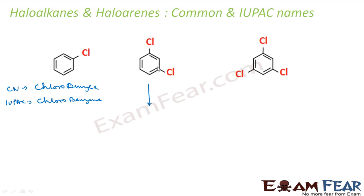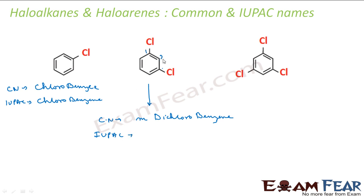Let's take this compound with 2 chlorines. The common name: it will be at the meta position — ortho, para, meta — this is the meta position — so it will be m-dichlorobenzene. For the IUPAC name: I can number 1, 2, 3 from this side, or 1, 2, 3, 4, 5 from the other, giving 1 and 5. Since 1 and 3 is preferred over 1 and 5, it will be 1,3-dichlorobenzene.